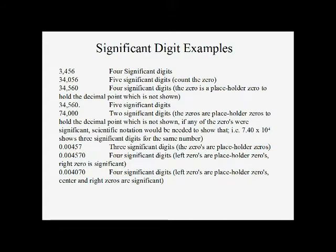Some examples: 3,456 — we're going to take all those digits, they're all significant. 34,056 — we have a zero in there, but it's between non-zero digits, so it's going to be counted. So we have five significant digits. 34,560 — that zero on the right is only there to show us where the decimal point is, so it is not significant.